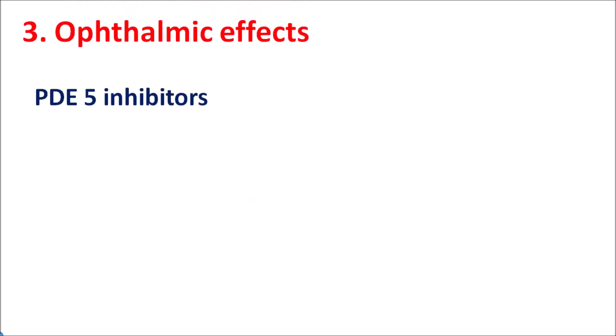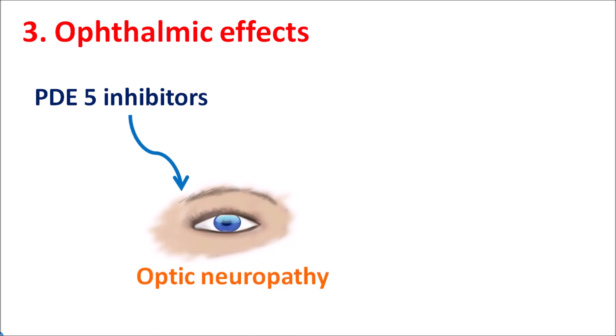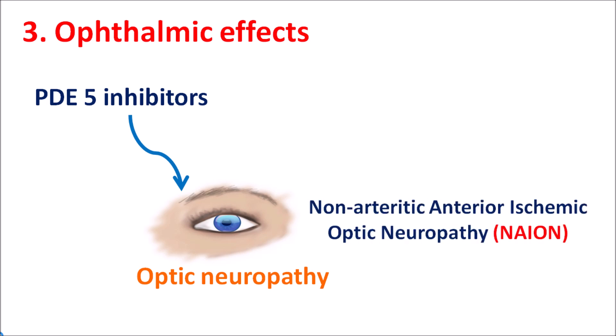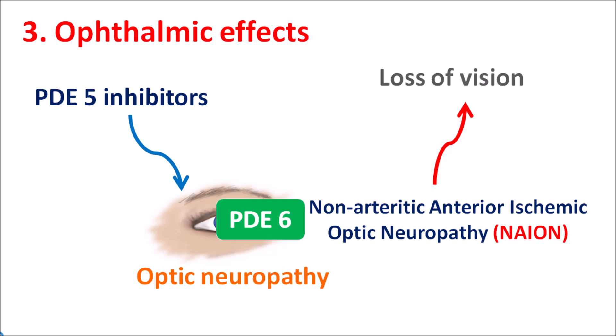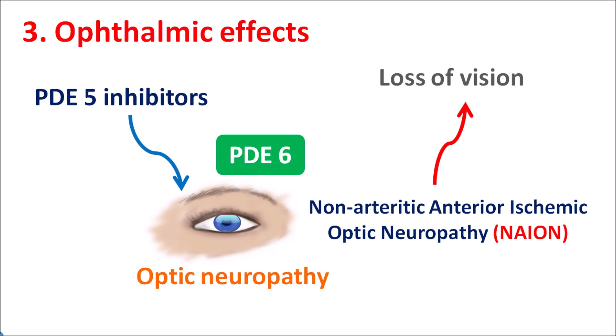The third precaution is ophthalmic effects. These drugs can affect vision and particularly produce optic neuropathy, specifically called non-arteritic anterior ischemic optic neuropathy (NAION). These drugs increase ischemia, reducing blood flow, which results in neuropathy and may lead to loss of vision. This effect is observed because PDE5 inhibitors can also block PDE6 enzyme activity — PDE6 is present on the retina — and when this enzyme activity is inhibited, it may increase neuropathy and lead to visual defects.